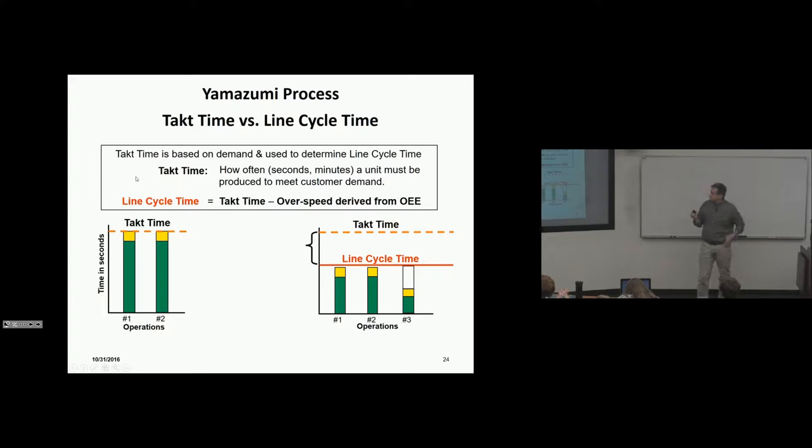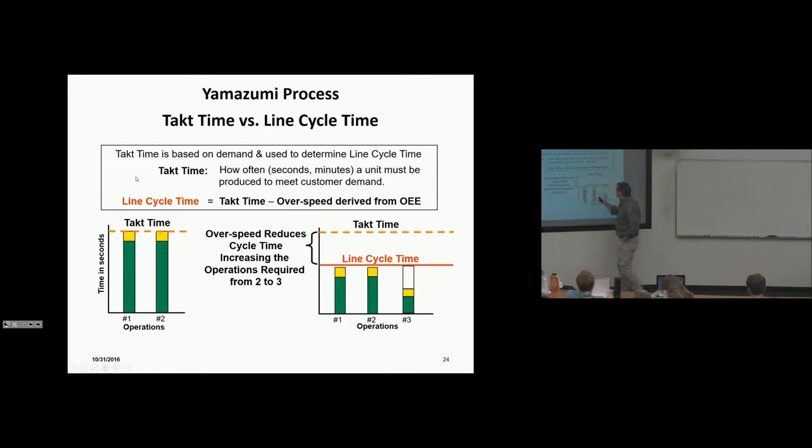Okay, now let's talk about takt time and line cycle time a little bit more. So takt time is based on demand and used to determine line cycle time. We know that line cycle time is takt time minus overspeed derived from OEE. Overspeed reduces cycle time, increasing the operations required. So in this particular example, if we were able to slow the line down to the customer demand, we would need two operators. If we have to take into account the OEE, which we do, we will need three operators. So think across your 900 jobs in assembly, what effect that would have? So again, that's waste.